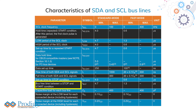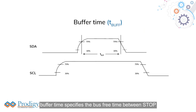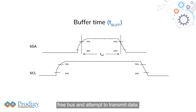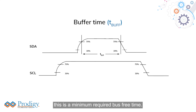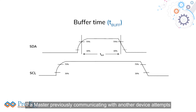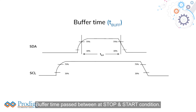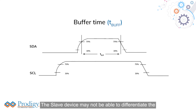Buffer Time specifies the bus-free time between stop and start conditions. This time period allows other devices on the bus to detect a free bus and attempt to transmit data. Slave devices often specify this as a minimum required bus-free time. If a master previously communicating with another device attempts to address a slave device without letting the elapsed buffer time pass between its stop and start condition, the slave device may not be able to differentiate the new start condition as a separate transaction and might not respond.